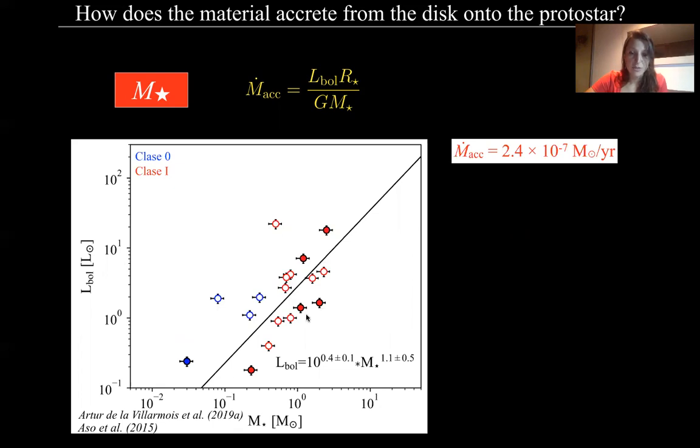If we fit only the Class 1 sources, we find a nice linear correlation between the protostar mass and the bolometric luminosity, because the index here is 1.1. And we also find an average mass accretion rate of 2.4 times 10 to the minus 7 solar masses per year. So here I plot the ranges 10 to the minus 7 and 10 to the minus 6, and almost all the sources lie between within this range.